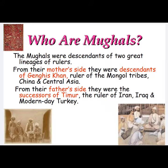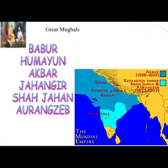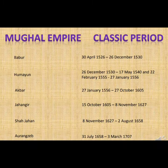The first six Mughal rulers were the most popular and powerful ones: Babar, Humayun, Akbar, Jahangir, Shah Jahan, and the last is Aurangzeb. Let's read about their time of rule.